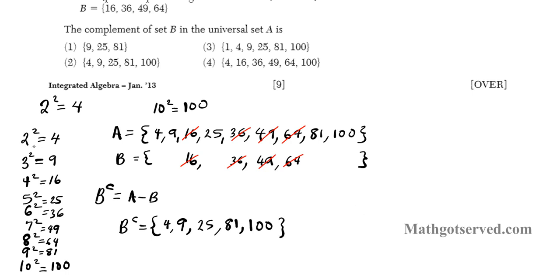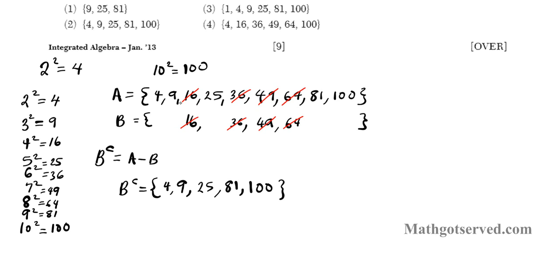Let me show you another way to represent this. We can use the Venn diagrams to capture what the complement is. So we have a universal set A. I'm going to represent that with a circle. So we have the universal set A. Now, the elements of set A, the universal set, are 4, 9, 16, 25, 36, 49, 64, 81, and 100. So this is set A right here.